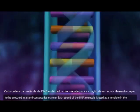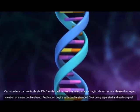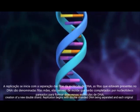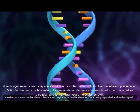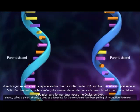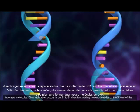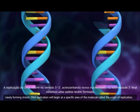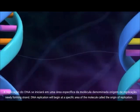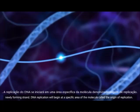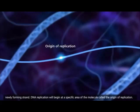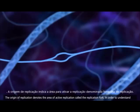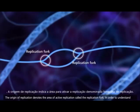Each strand of the DNA molecule is used as a template in the creation of a new double strand. Replication begins with double-stranded DNA being separated, and each original strand, called a parent strand, is used as a template for the complementary base pairing of nucleotides to make two new molecules. DNA replication occurs in the 5' to 3' direction, adding new nucleotides to the 3' end of the newly forming strand. DNA replication will begin at a specific area of the molecule called the origin of replication, which denotes the area of active replication called the replication fork.